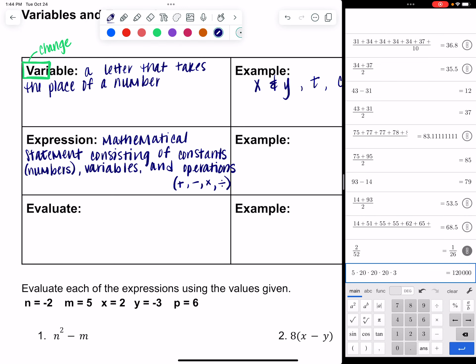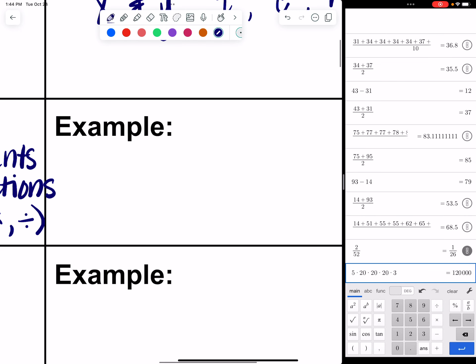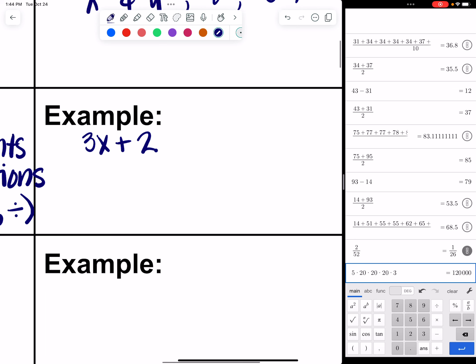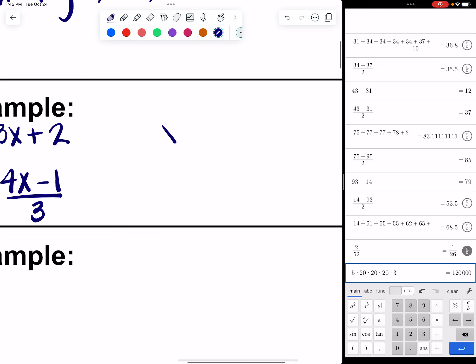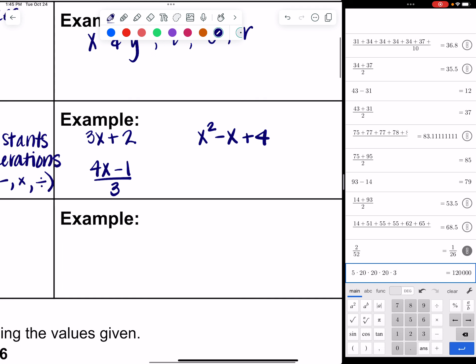So, an example of an expression might be 3X plus 2. Or you could have 4X minus 1 over 3. We could throw in some exponents. We could have X squared minus X plus 4. All of those are expressions.